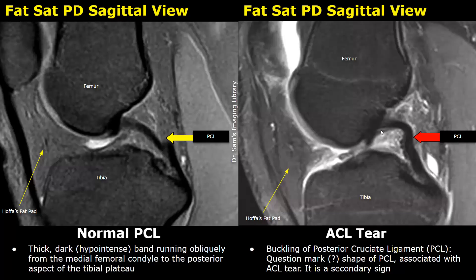In the image on the right, an ACL tear was noted. We can see the difference in the shape of the PCL — it has a question mark shape. This is also called buckling of the posterior cruciate ligament, and it was associated with the ACL tear. It is a secondary sign.